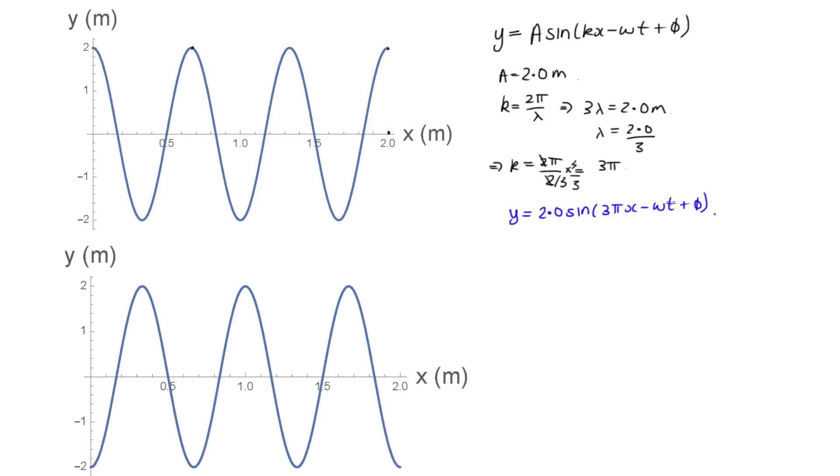Now omega t is actually a bit harder, so let's start with phi, so this diagram tells us that when x equals 0 and we're told in the question that t equals 0 for this diagram then we know that y is equal to 2, that's this point here, the height is 2, so y is equal to 2.